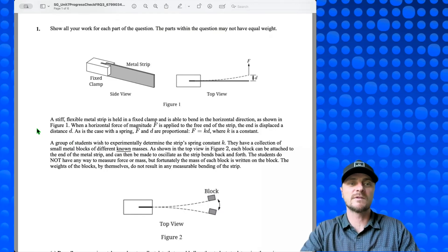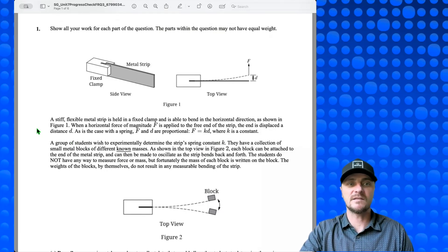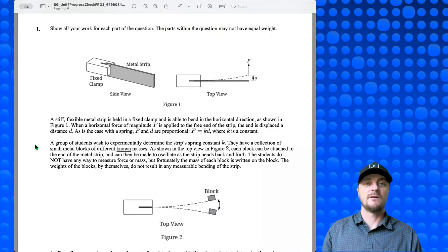A stiff, flexible metal strip is held in a fixed clamp and is able to bend in the horizontal direction as shown in Figure 1. When a horizontal force of magnitude F is applied to the free end of the strip, the end is displaced a distance d. As is the case with a spring, f and d are proportional: f equals kd, where k is a constant.